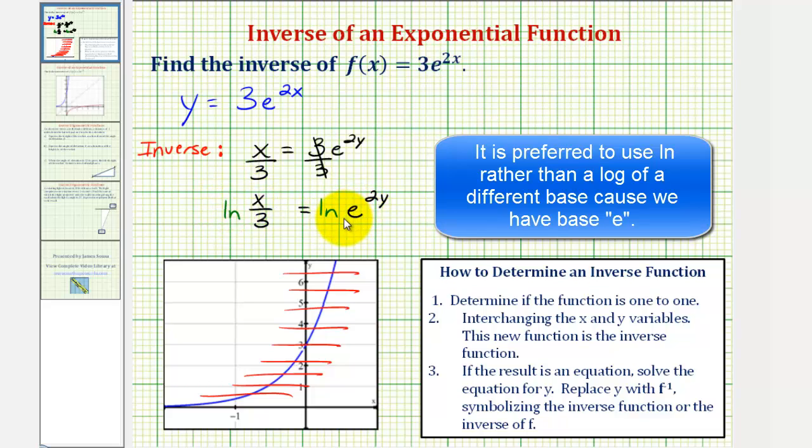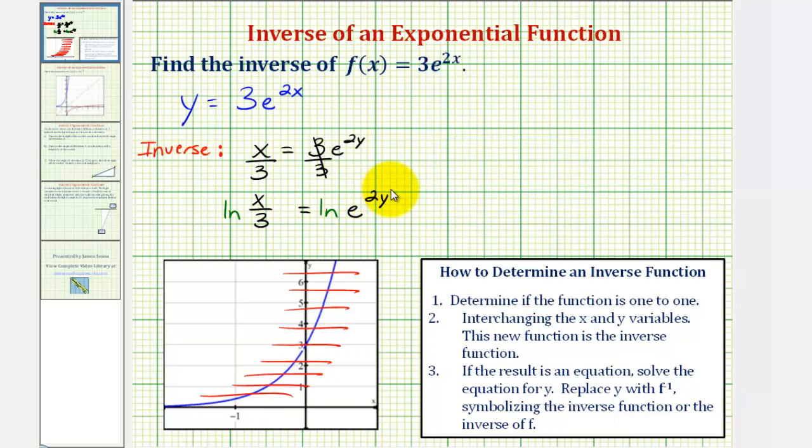we can apply the power property of logarithms, meaning on the right side, we can take the exponent and write it as a product with natural log e. So we have natural log of x divided by 3 equals 2y times natural log e.